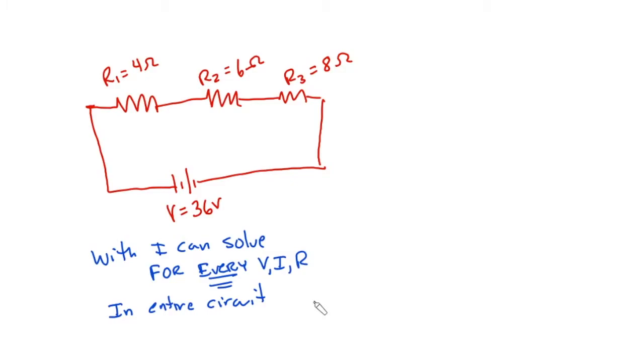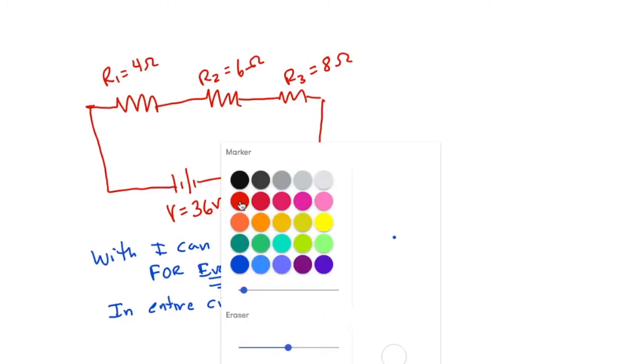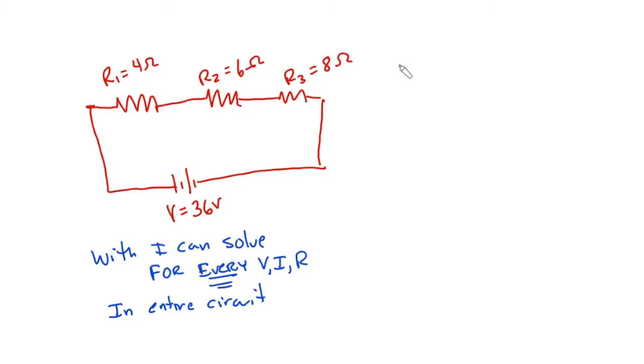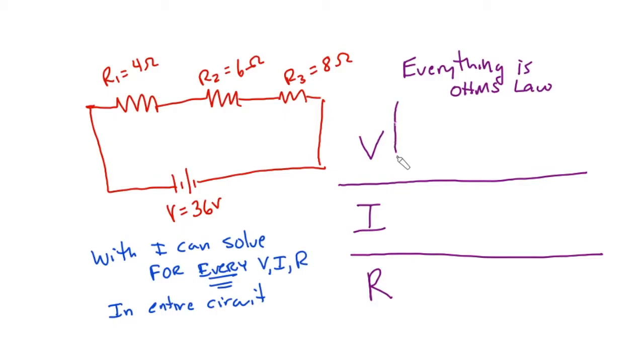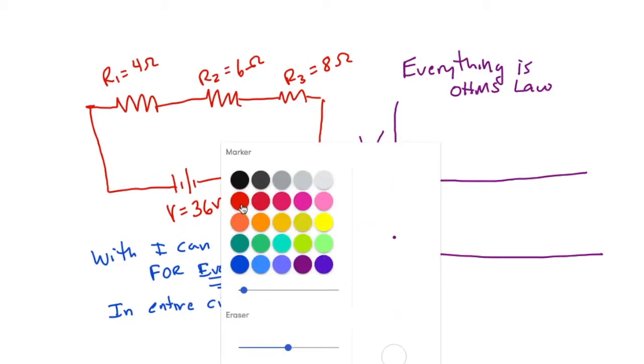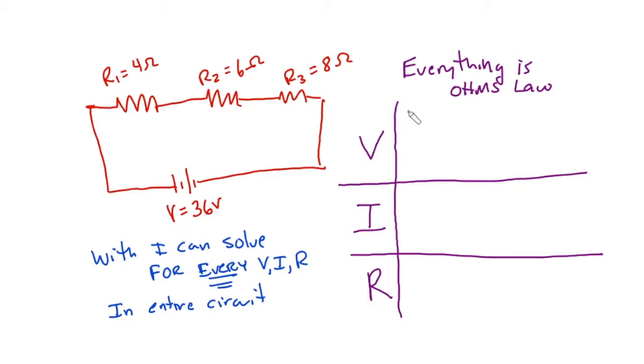We know, and this is going to be a super important chart. So please pay attention. Everything is Ohm's law. So everything needs to obey V, I, and R. So when you're figuring, and this is going to go for parallel as well. Everything has a V, an I, and an R. The next thing we're going to do is we are going to write how many resistors I have. I have resistor one, I have resistor two, I have resistor three, and I have totals.